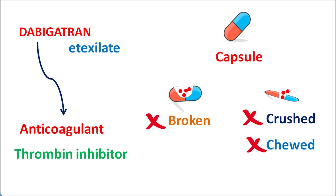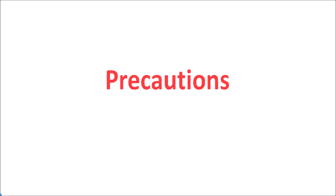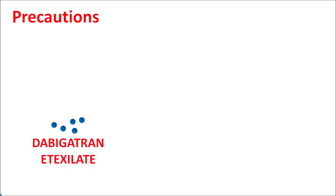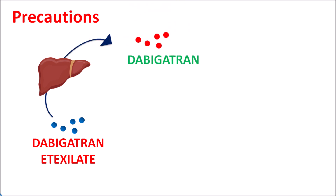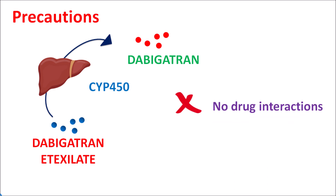We will discuss the mechanism of action, important precautions, side effects, doses, and dose adjustments in renal failure. Dabigatran etexylate is a prodrug that is metabolized within the liver to produce the active metabolite dabigatran via simple ester hydrolysis. This hydrolysis is not significantly carried out by the cytochrome P450 system, and fortunately this drug has no drug interactions at the metabolic level.